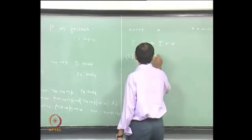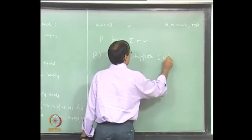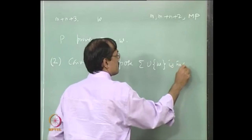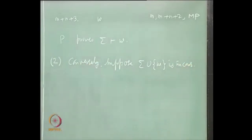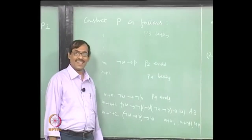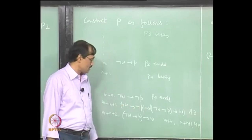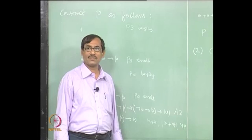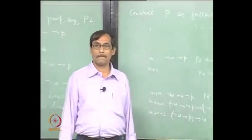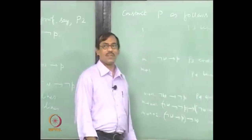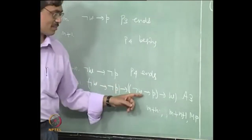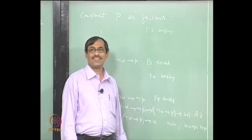Conversely, suppose sigma union w is inconsistent. There is a problem — it does not go as it is, because in A3 you have to start with the not symbol. If you follow the same procedure, it will say w implies not-v, w implies p, not-w. That cannot be brought here because that is not an axiom. Suppose you uniformly replace w by not-w: you would get not-not-w implies not-p, then not-not-w implies p, therefore not-w. It will go for not-not-w.